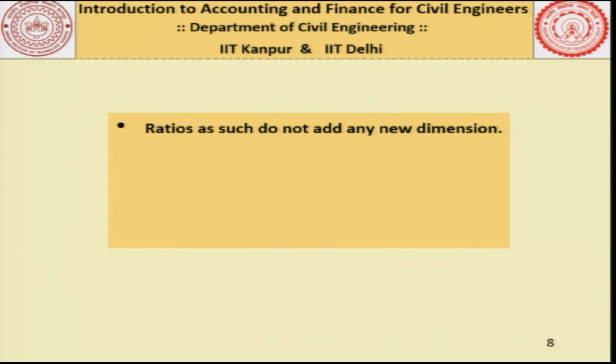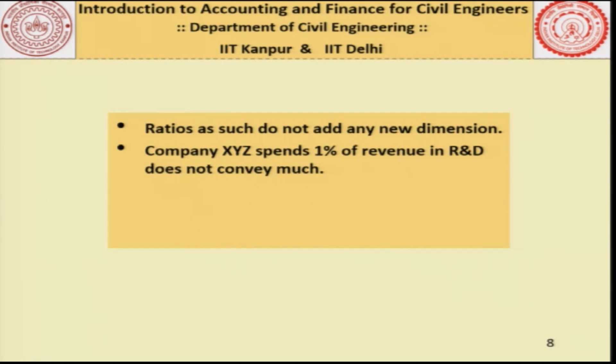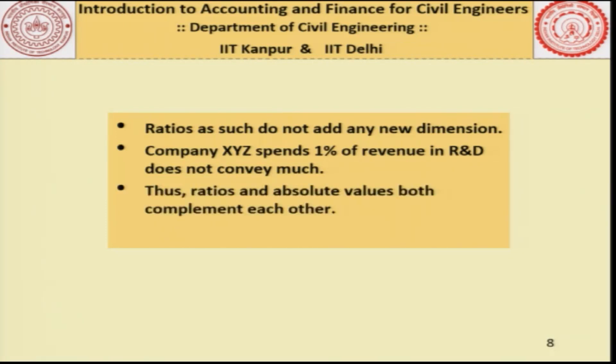Ratios as such do not add a new dimension. For example, if it says that company XYZ spends 1% of its revenue in R&D, this does not convey anything on its own — we need to know what the revenue is to understand the actual spending on R&D. Thus ratios and absolute values are actually complementary to each other when we want to make evaluations and decisions. When taking ratios, we are also making certain simplifying assumptions, and one has to be careful what ratio to use at what point in time, for what kind of comparison, and what its limitations are.